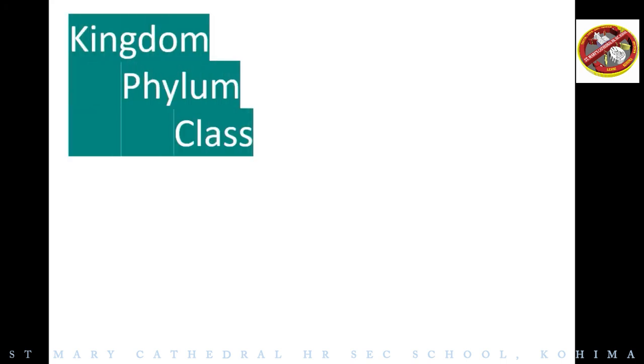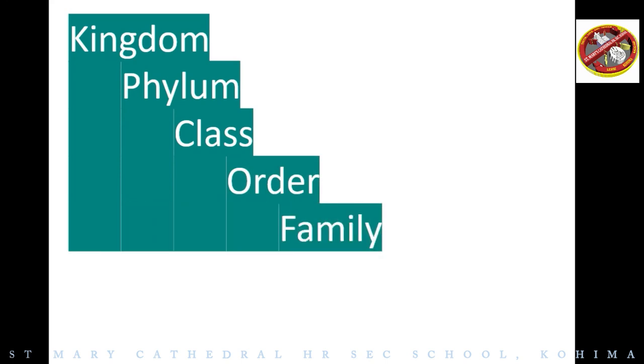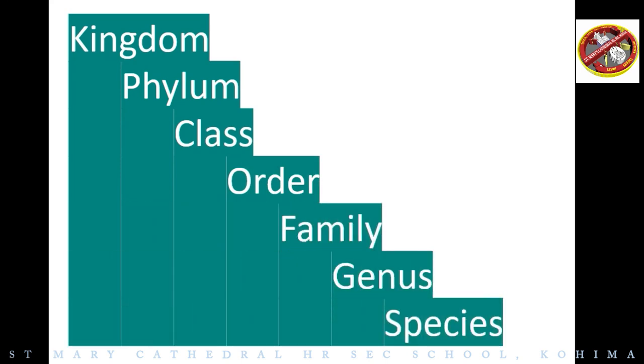Further classification is done by naming subgroups at various levels as follows: Kingdom, Phylum, Class, Order, Family, Genus, and Species.